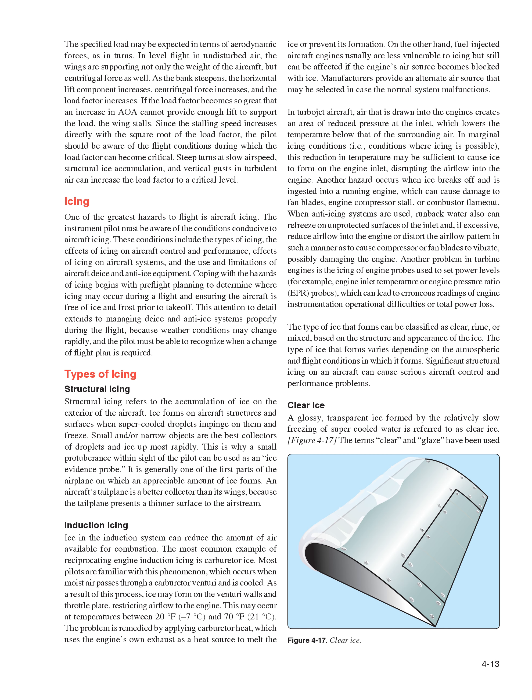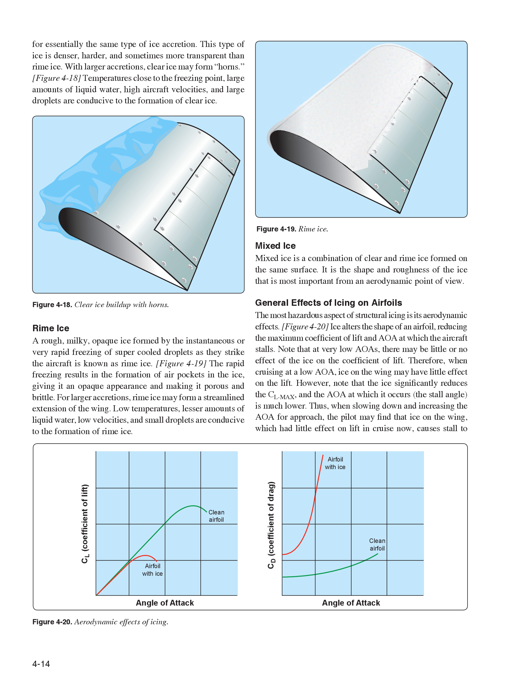The type of ice that forms varies depending on the atmospheric and flight conditions. Clear ice is transparent ice formed by the relatively slow freezing of supercooled water. This type of ice is denser, harder, and sometimes more transparent than rime ice. With larger accretions, clear ice may form horns. Temperatures close to the freezing point, large amounts of liquid water, and high aircraft velocities are conducive to clear ice formation. Rime ice is rough, milky, opaque ice formed by the instantaneous or very rapid freezing of supercooled droplets as they strike the aircraft. The rapid freezing results in the formation of air pockets in the ice, giving it an opaque appearance and making it porous and brittle. Low temperatures, lesser amounts of liquid water, low velocities, and small droplets are conducive to the formation of rime ice.